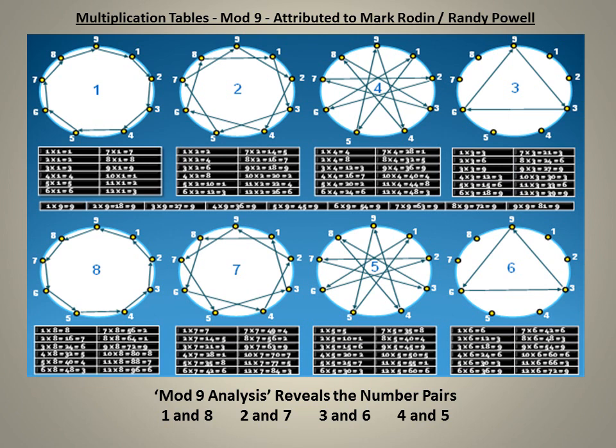To clarify how we get to these geometries, let's start with the 1 times table: 1×1=1, 2×1=2, 3×1=3, etc. You can see that the 1 times table creates a geometric shape called a nonagon, and the direction of flow is clockwise. The 2 times table goes 2, 4, 6, 8, then 10 is 1 mod 9, 12 is 3 mod 9, etc., producing a different geometry also flowing in a clockwise direction.